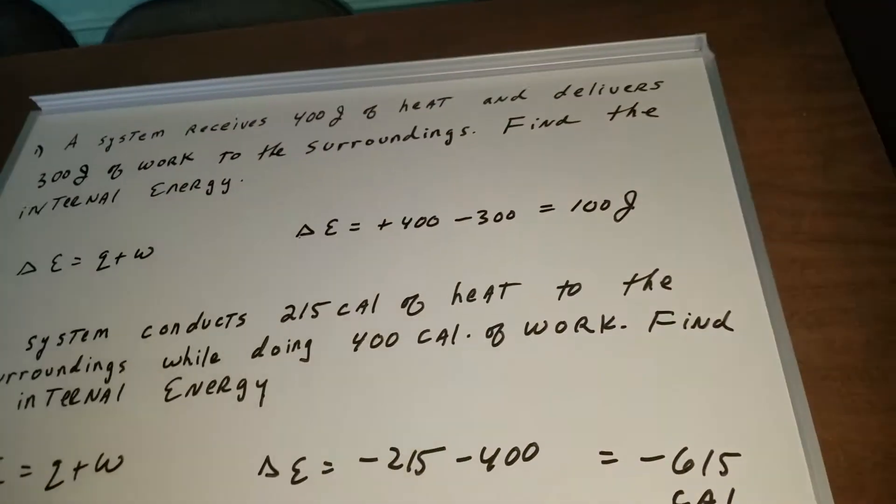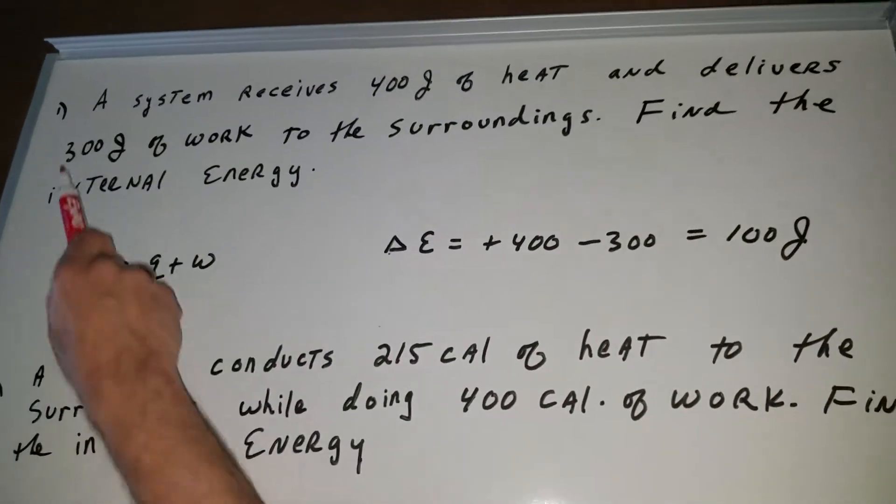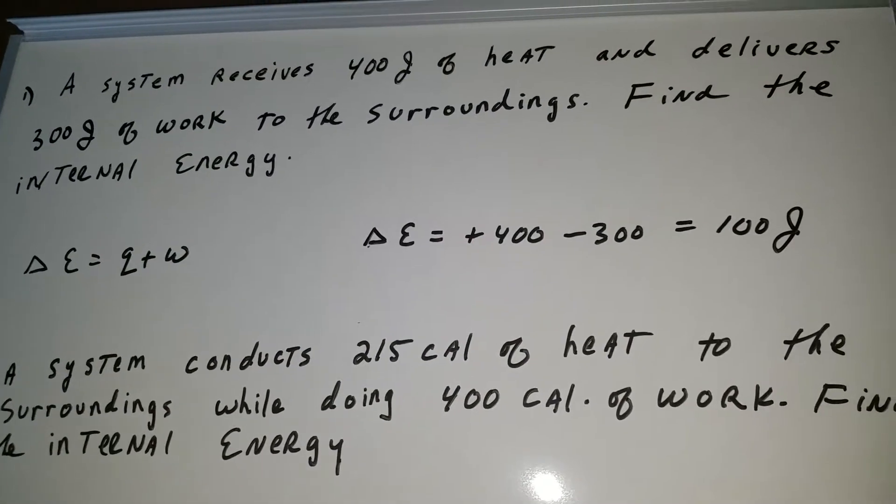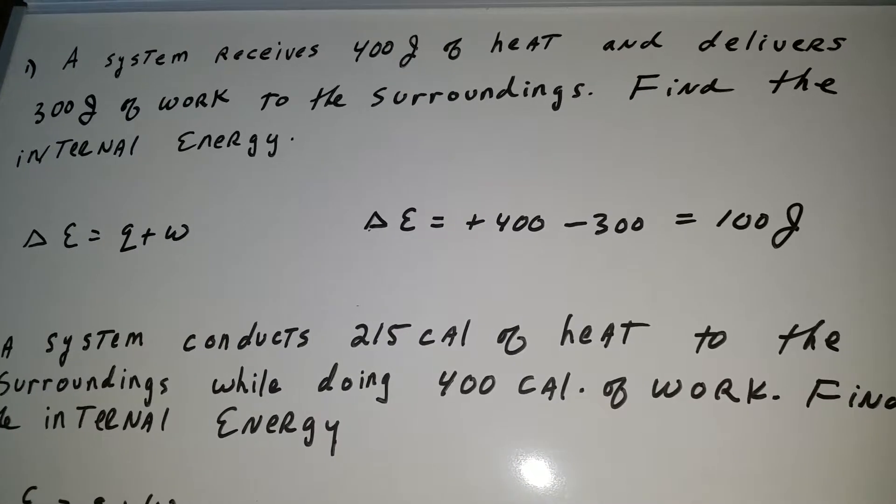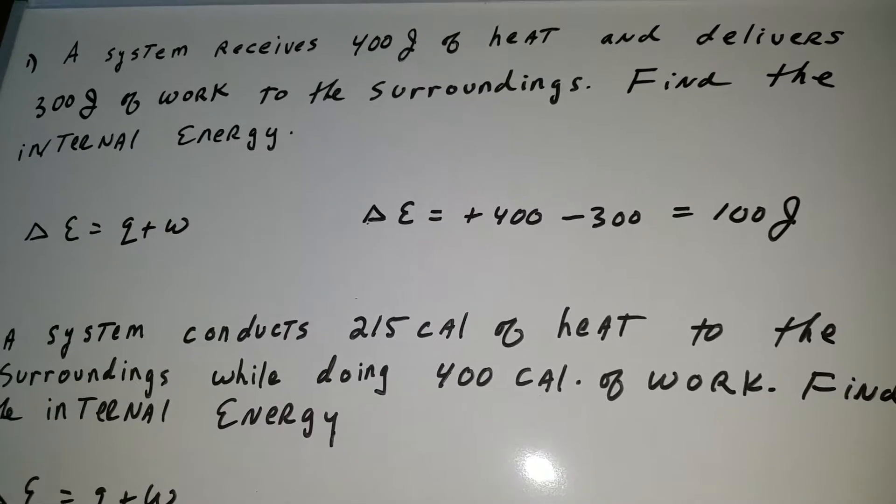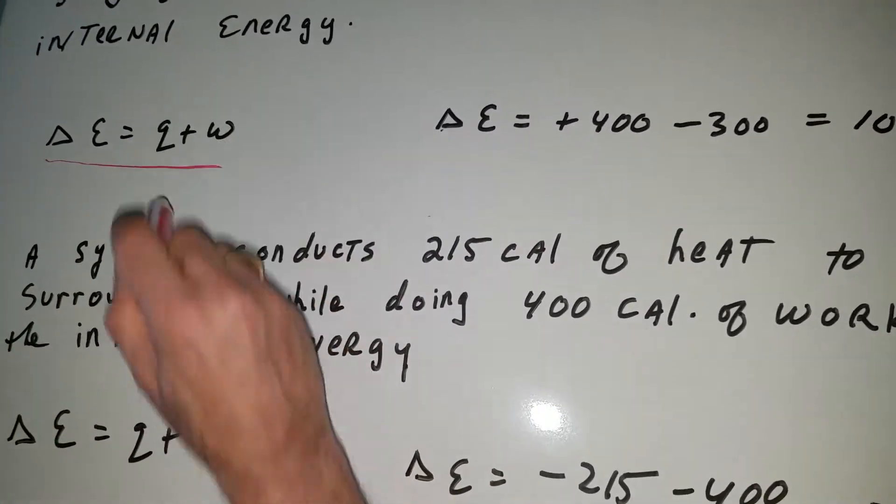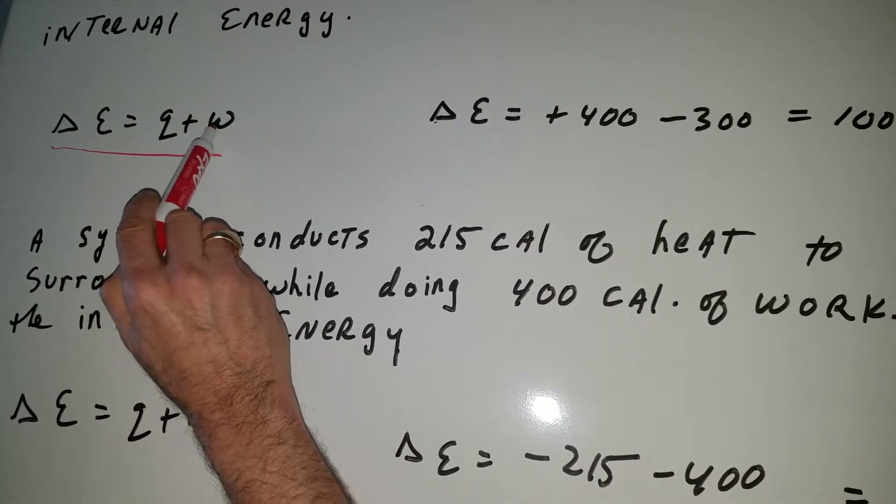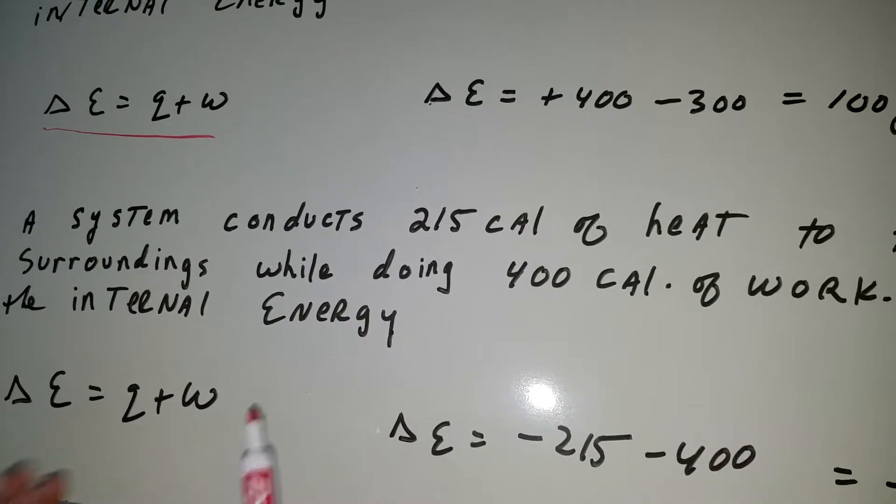Absolutely, let's go over it. Okay, now this is a tricky type of situation. It says that we have a system and it receives 400 joules of heat and it delivers 300 joules of work to the surroundings. Find the internal energy. The first thing we want to do is note the formula for internal energy, which is delta E is equal to Q plus W. Q stands for the heat and W stands for the work.